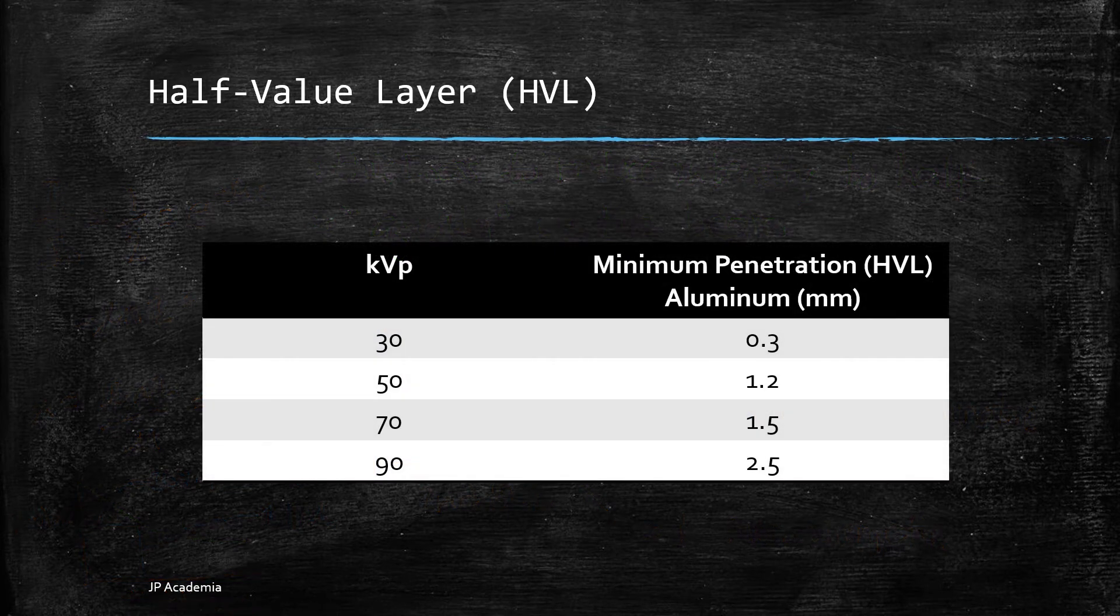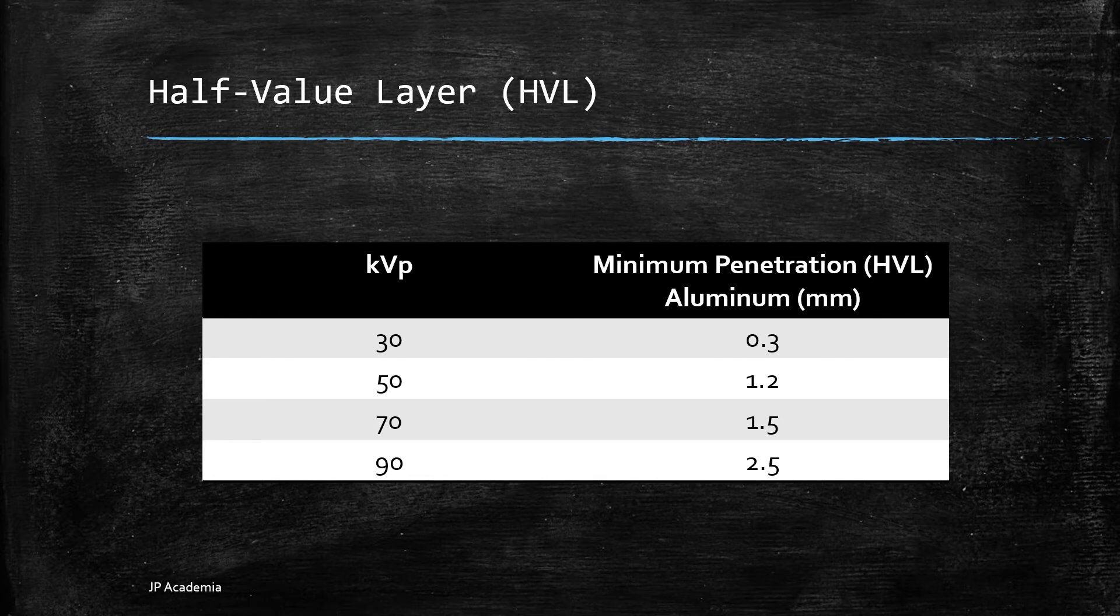So I have this table here. It shows the recommended minimum penetration or the HVL for various KVP values. Note that KVP is just the kilovoltage peak which is the peak potential applied to the x-ray tube which accelerates electrons from the cathode to the anode in radiography or computed tomography. Tube voltage in turn determines the quantity and quality of the photons generated. Thus increasing KVP increases the x-ray penetration power. As KVP increases greater proportion of photons interact with the body and the HVL for aluminum also increases.